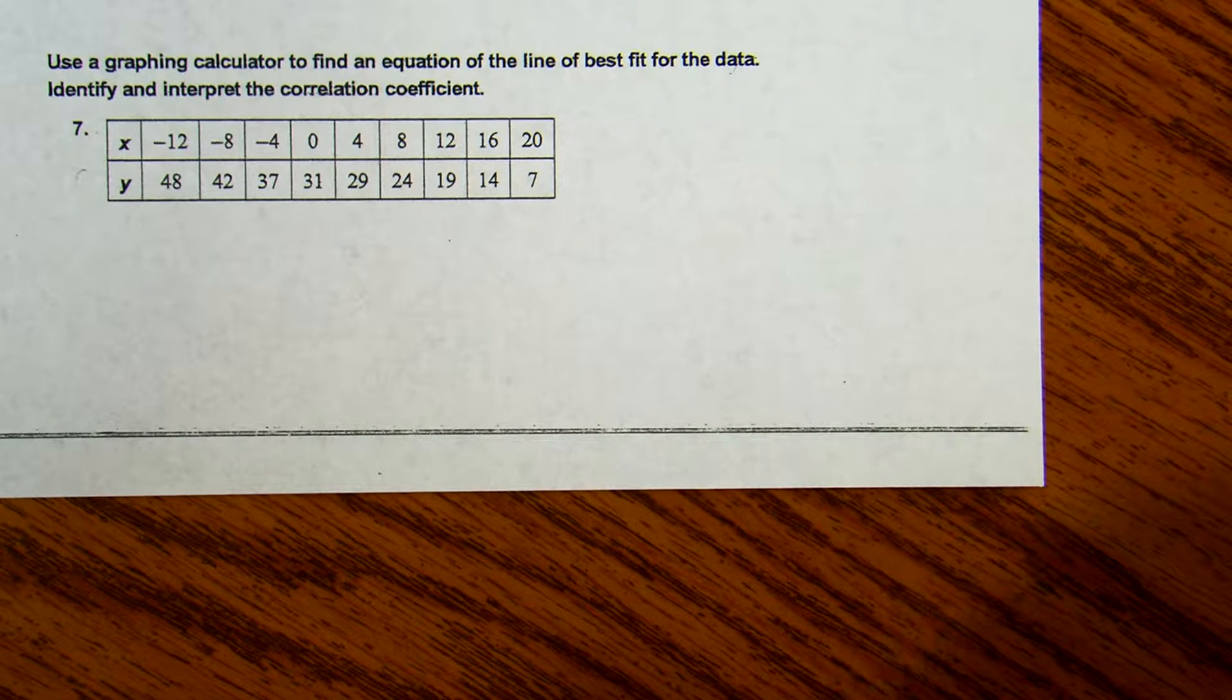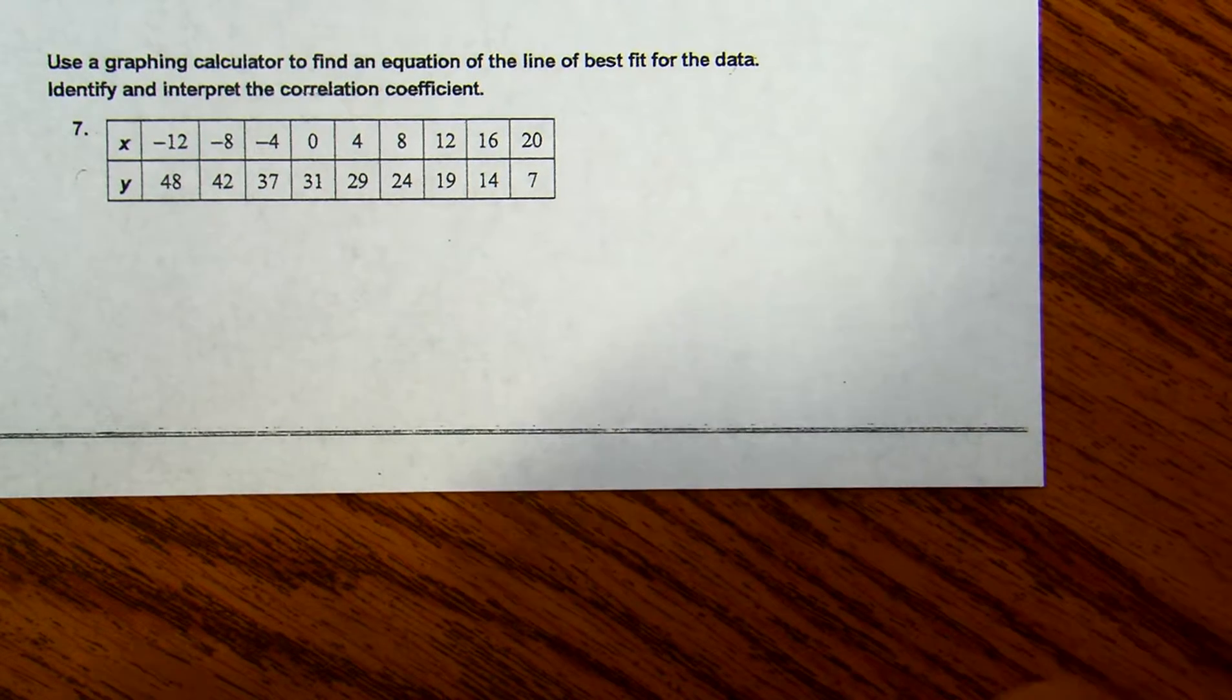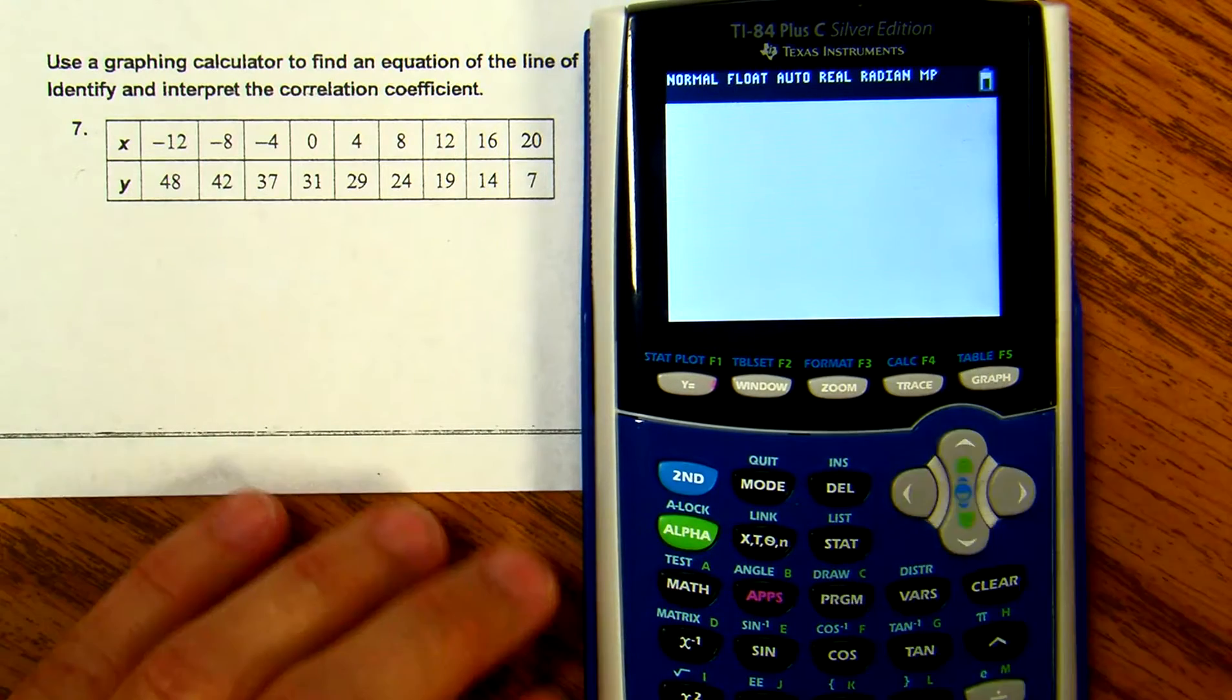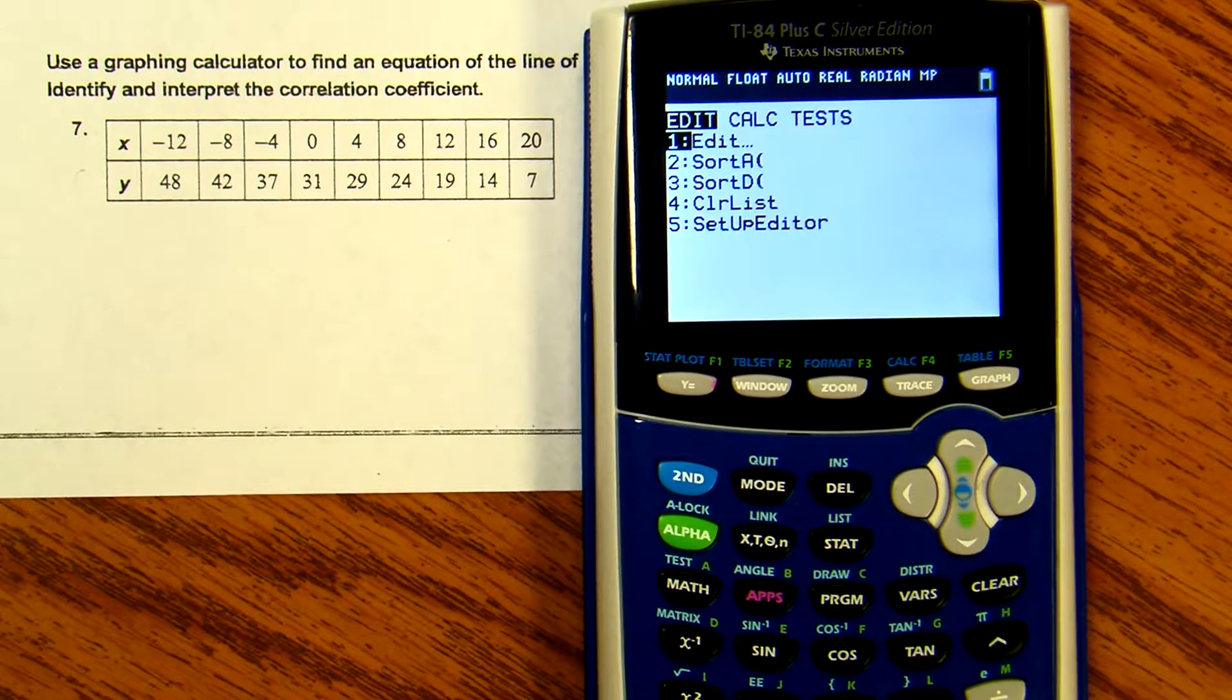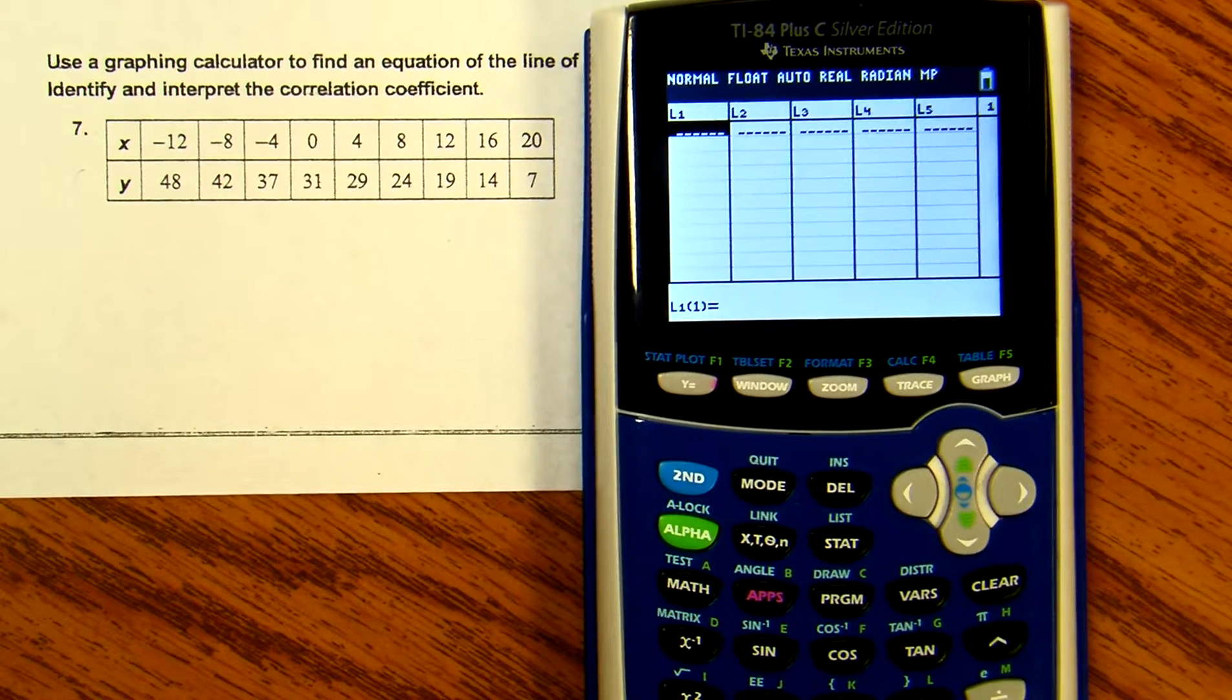The first thing we're going to do is take our graphing calculator and go to STAT, which is right below delete. Hit the STAT button, then hit enter on the edit option.